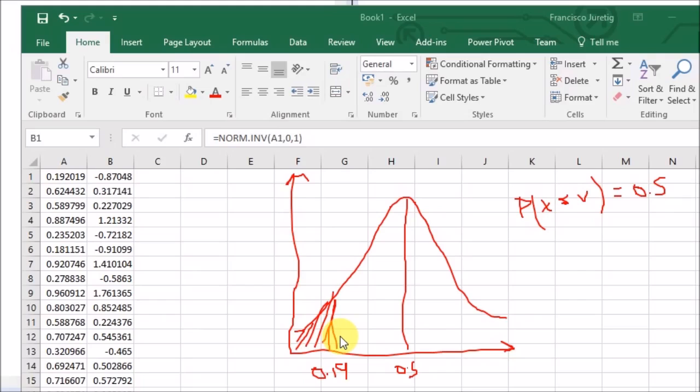So what I am instructing Excel or Microsoft Excel to do here is to tell me what's the value of a normally distributed variable, what's the proper value that returns 0.19 of probability mass here.